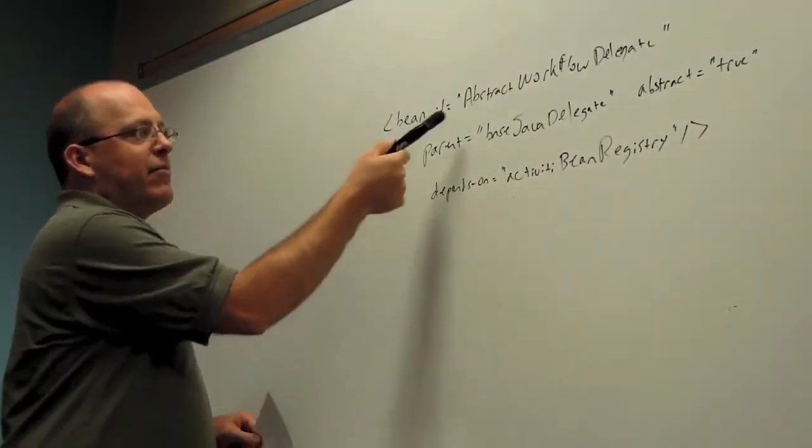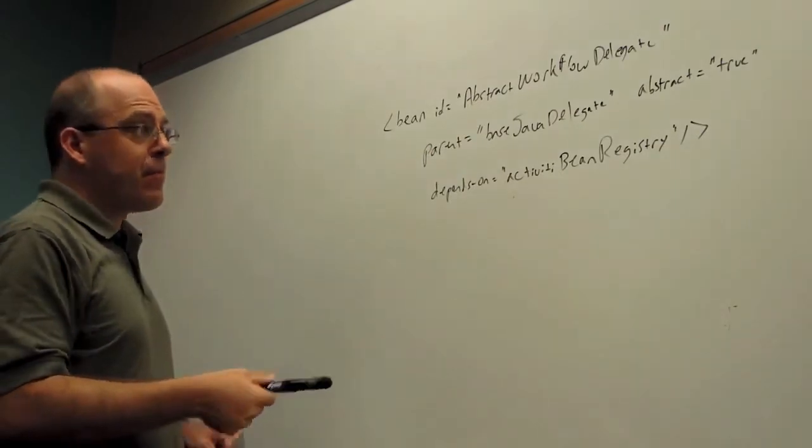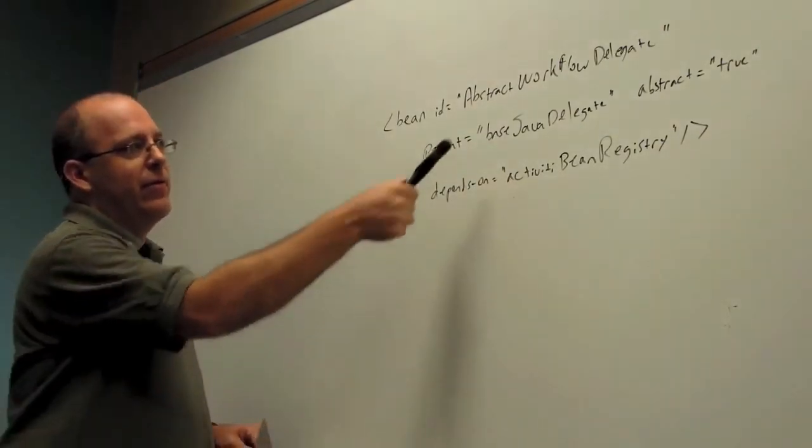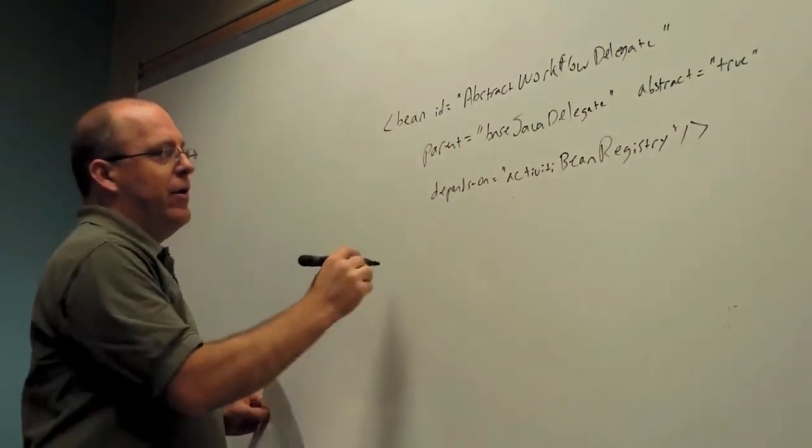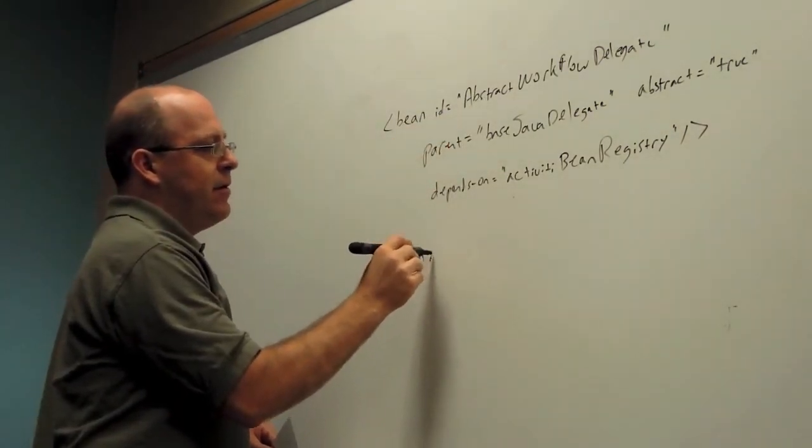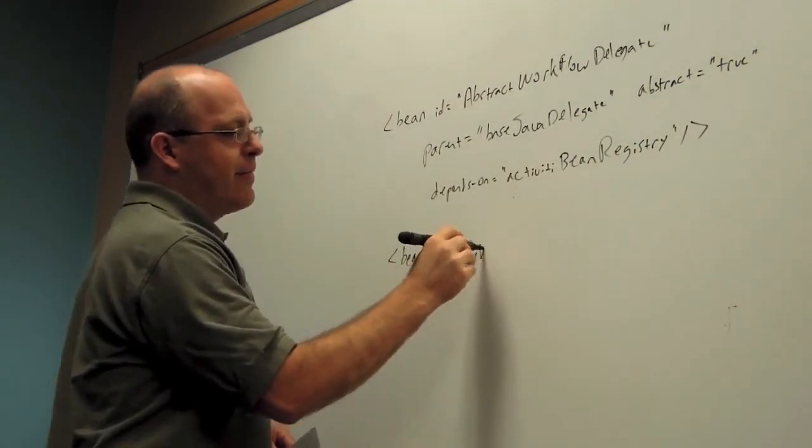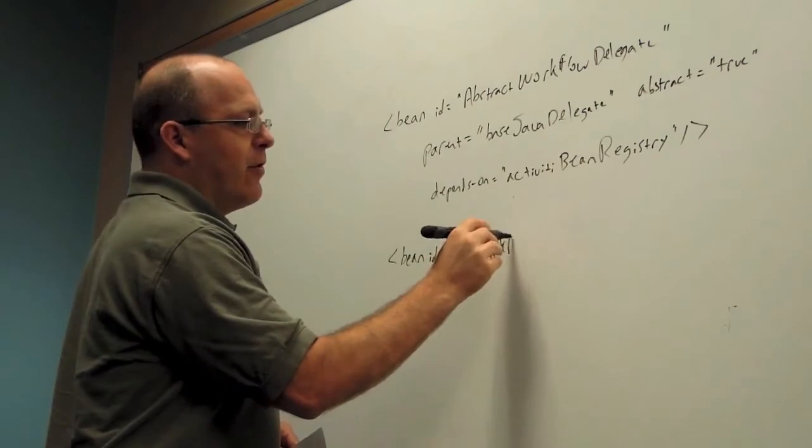So now we have this abstract bean that we can use. So any other classes we create, we don't have to write all this logic again. We'll just use this abstract class. For example, if I make a bean, my workflow bean, let's call it my workflow class.